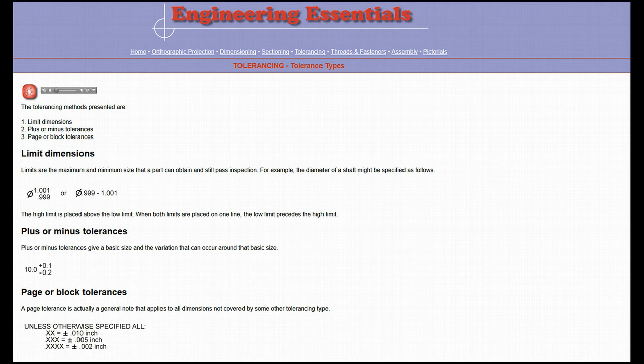There are three different methods of presenting standard XY coordinate tolerances. One, in the form of limits. Two, in the form of plus or minus tolerances. And three, page or block tolerances.